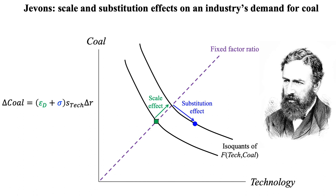The same mistake happens today. The government forces people to buy fuel-efficient cars with the stated intention of reducing the use of gasoline. But the scale effect — sometimes called the rebound effect by environmental economists — says that people will drive more and might end up purchasing more gasoline. Regardless, the scale effect is undoing some of the intended effect. This is why economists are much bigger fans of gas taxes than they are of micromanaging the design of automobiles.